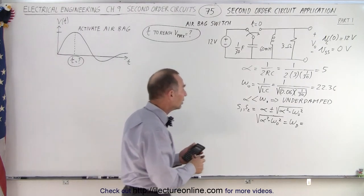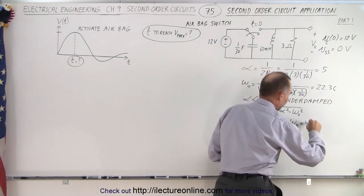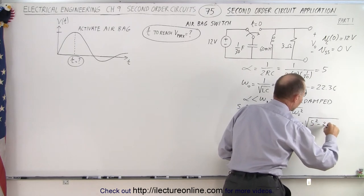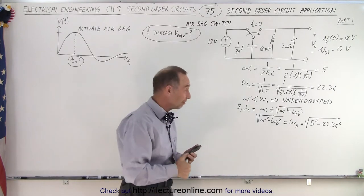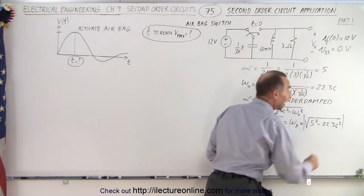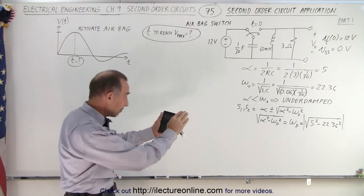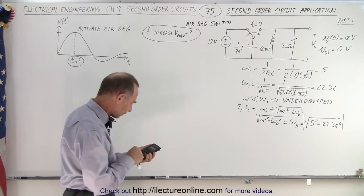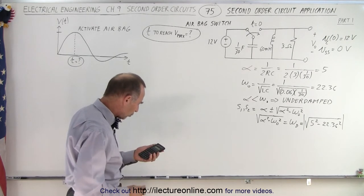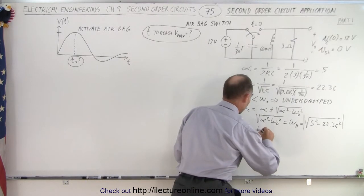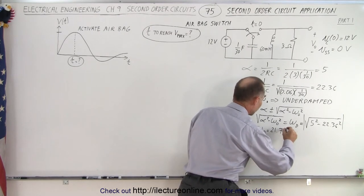Let's calculate omega_d. We have 5 squared minus 22.36 squared. We take the absolute value since we know it represents a real oscillation frequency. 22.36 squared is approximately 500; subtract 25, giving 475, and take the square root. We end up with omega sub-d equal to 21.794.